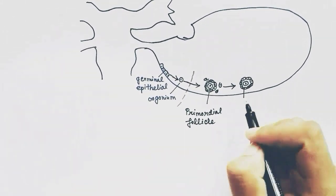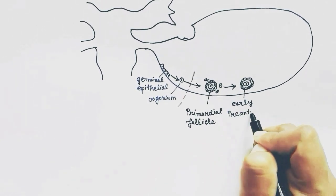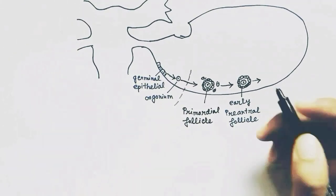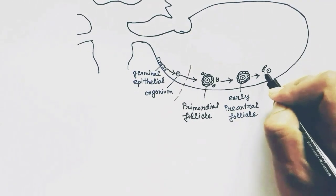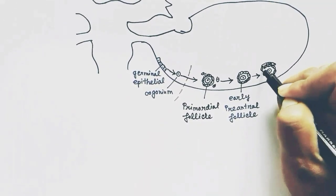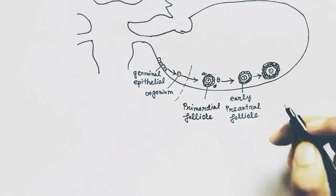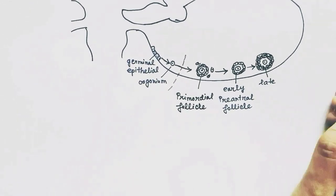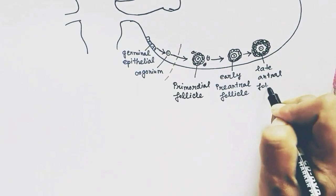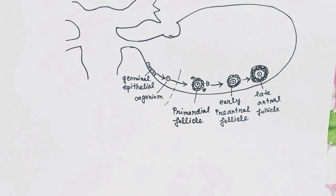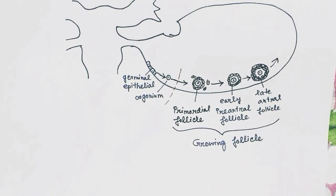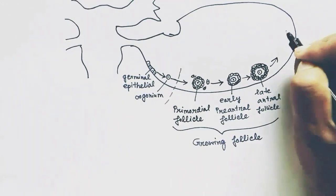At first, the primary oocyte gets surrounded by a single layer of follicular cells. This single-layered follicular structure is called the primordial follicle. Then, more layers of follicular cells develop surrounding the oocyte, and these developing follicles are called growing follicles.